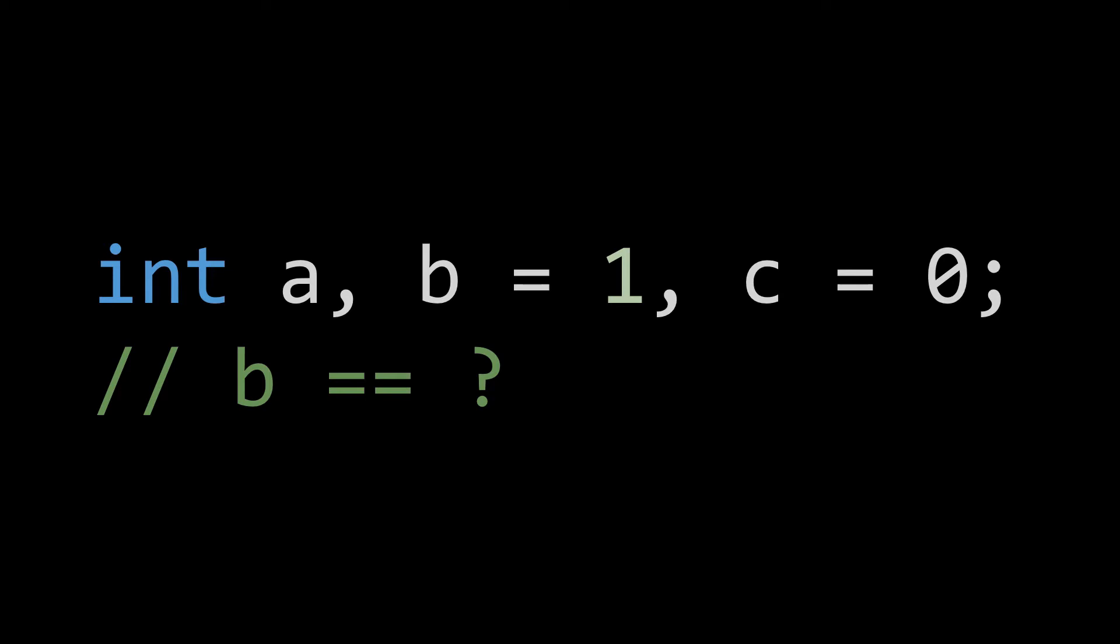All right, so this should be easy. Take a look at the following example. Here we declare three variables, A, B, and C. Can you guess what B is initialized to? B is initialized to one. While the example is trivial to the C++ developer, it should strike a chord with people that are new to the language.